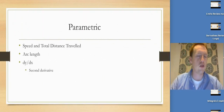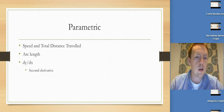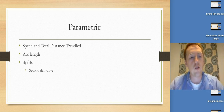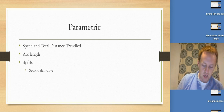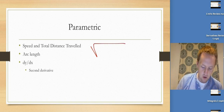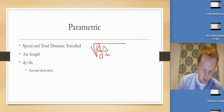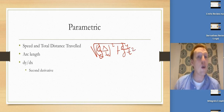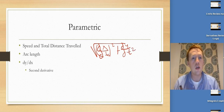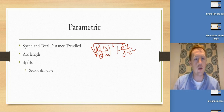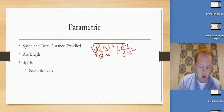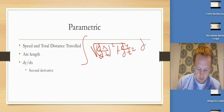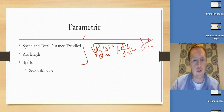We're starting off with parametric because polar tends to rely on parametric ideas. The big things here are speed and total distance traveled. Speed is the square root of (dx/dt)² + (dy/dt)². If we integrate speed, we get total distance traveled. So let's integrate speed — now we've got total distance traveled.